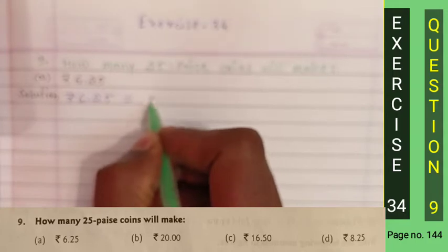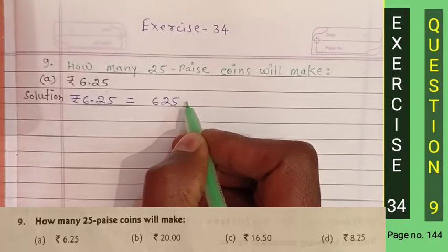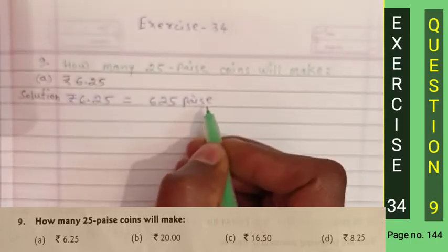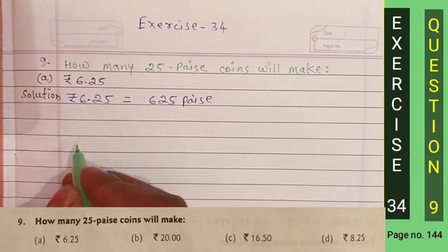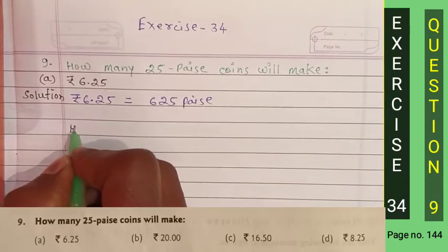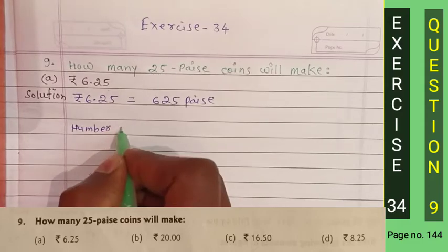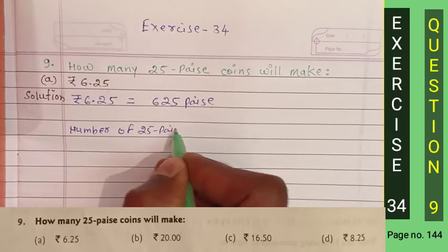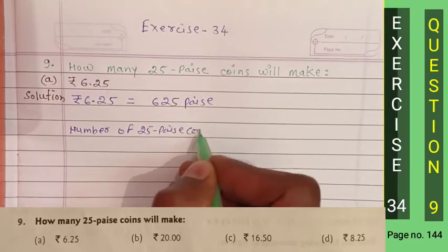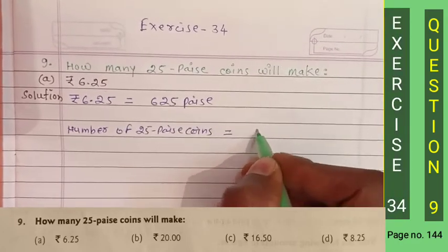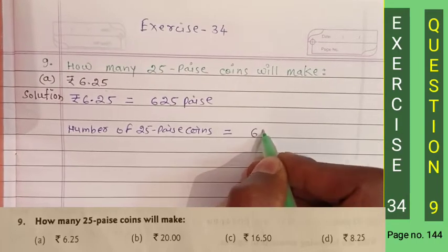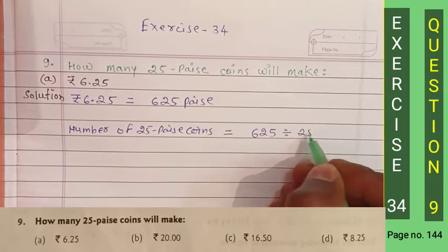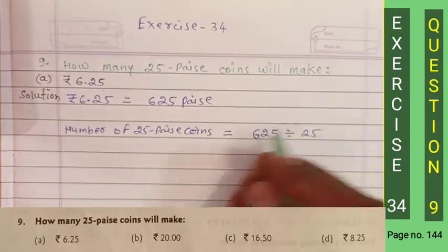We get 625 paise. Then we have to find the number of 25 paise coins, so we divide 625 paise by 25.